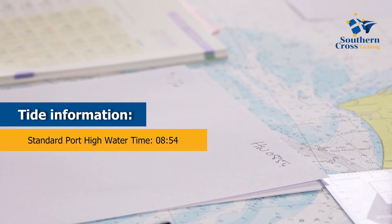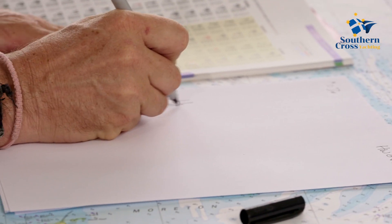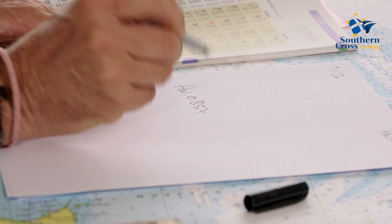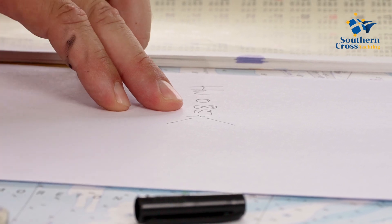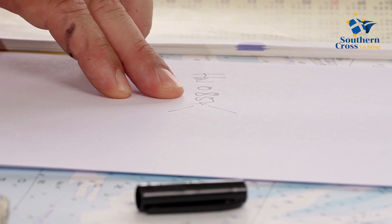That would be our time of high water: 08:54. Jamie's top tip: use a whole piece of paper — or a whiteboard if you have one. Write the high water in big letters in the middle of the page. Bearing in mind that high water is a full hour, it starts 30 minutes before 08:54 and ends 30 minutes after 08:54. If we recall the bell curve from a previous video, that high water comprises 30 minutes either side.